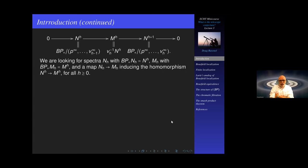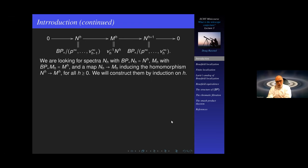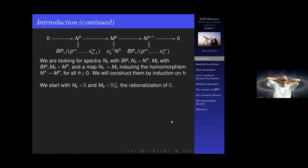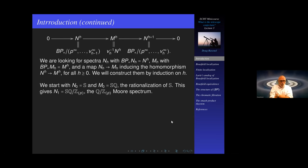If there were a cofiber sequence having these comodules as their BP homology, we would be in business. So we're looking for spectra N_h and M_h such that the BP homology of N_h is the N^h in the short exact sequence, and similarly for M, and we want a map from N_h to M_h inducing the appropriate homomorphism. We're going to do this by induction on h. The first step is easy: we take N_0 to be the sphere spectrum, whose BP homology is BP_*, and M_0 to be the rationalization of the sphere spectrum.